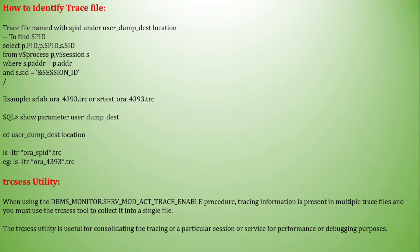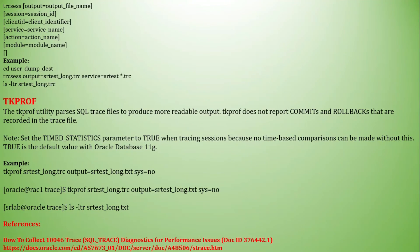Tracing information is present in multiple trace files and you must use the TRCSESS tool to collect it into a single file. The TRCSESS utility is useful for consolidating tracing of a particular session, service, or module for performance or debugging purposes. Usage: cd to USER_DUMP_DEST location, then run: trcsess output=srcast_long_.trc service=<service_name> srcast*.trc. The result will be a single consolidated trace file.